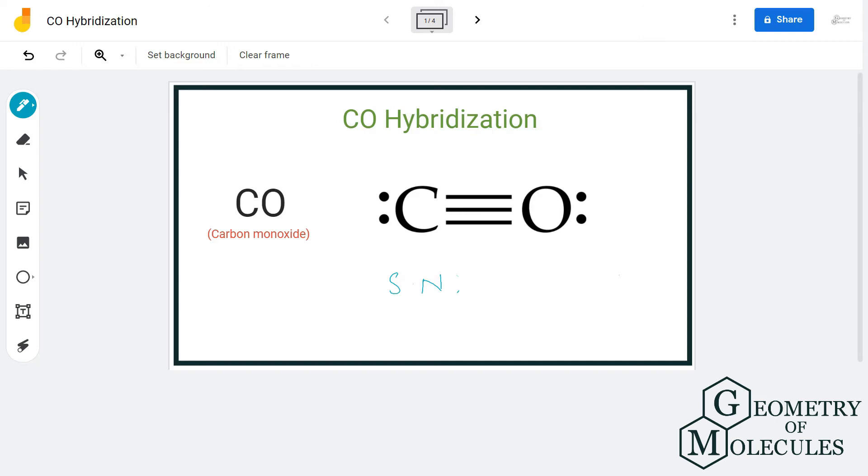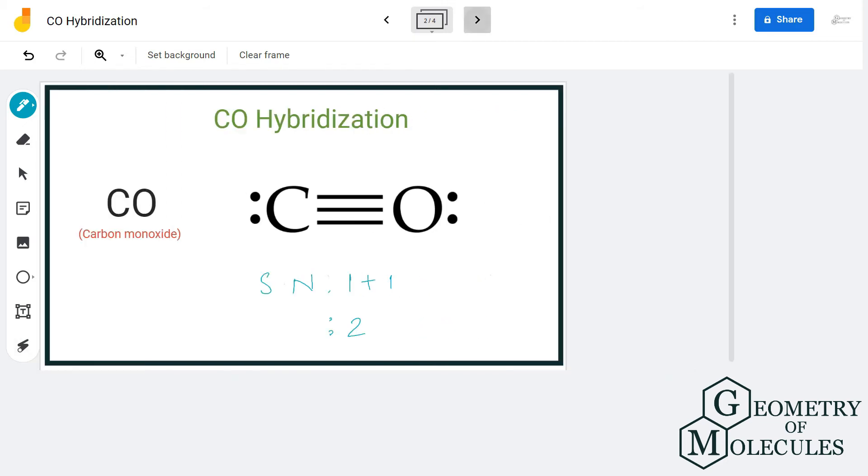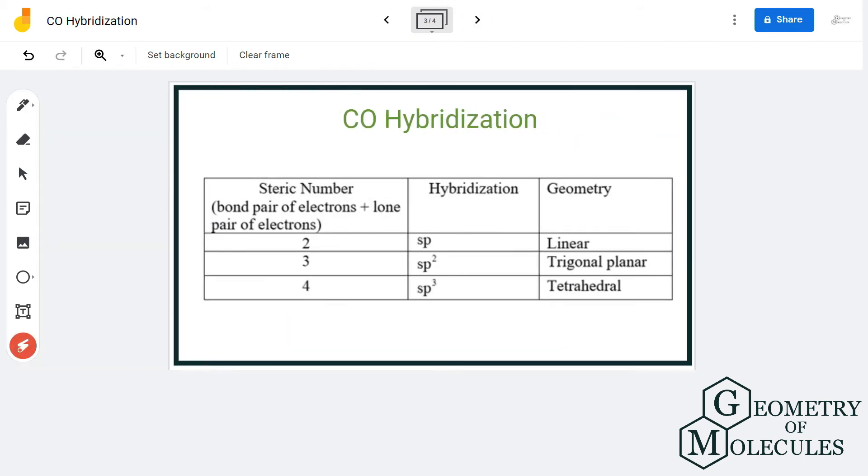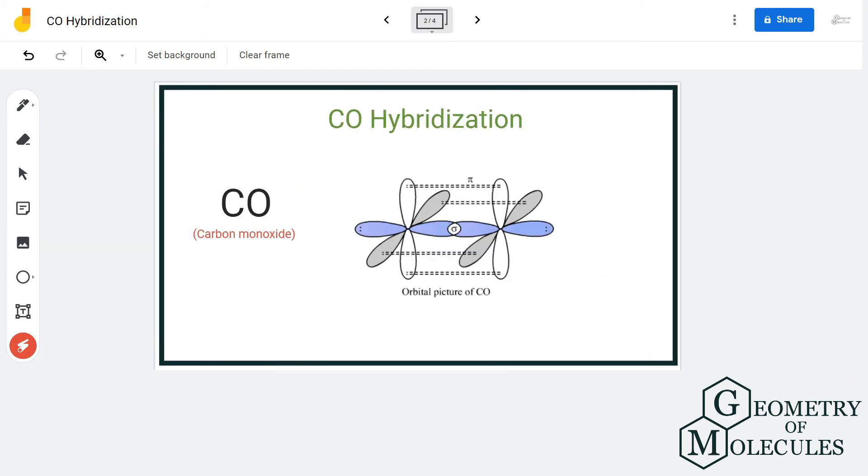For carbon, we have one lone pair of electrons and there is one atom of oxygen attached to it, so the steric number is two. If you look at this table, which helps us know the hybridization just by looking at the steric number, molecules that have steric number two have sp hybridization.